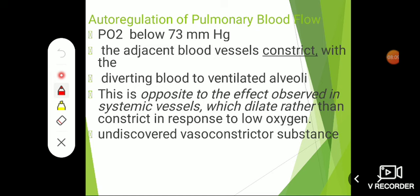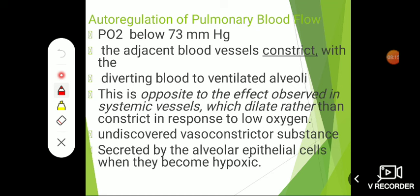The exact reason for hypoxic vasoconstriction in the lungs is not fully discovered. An undiscovered vasoconstrictor substance is supposed to be released by alveolar epithelial cells when they become hypoxic. This is the proposed theory, and perhaps in the future we will be able to identify what vasoconstrictor substance leads to vasoconstriction in response to hypoxia.